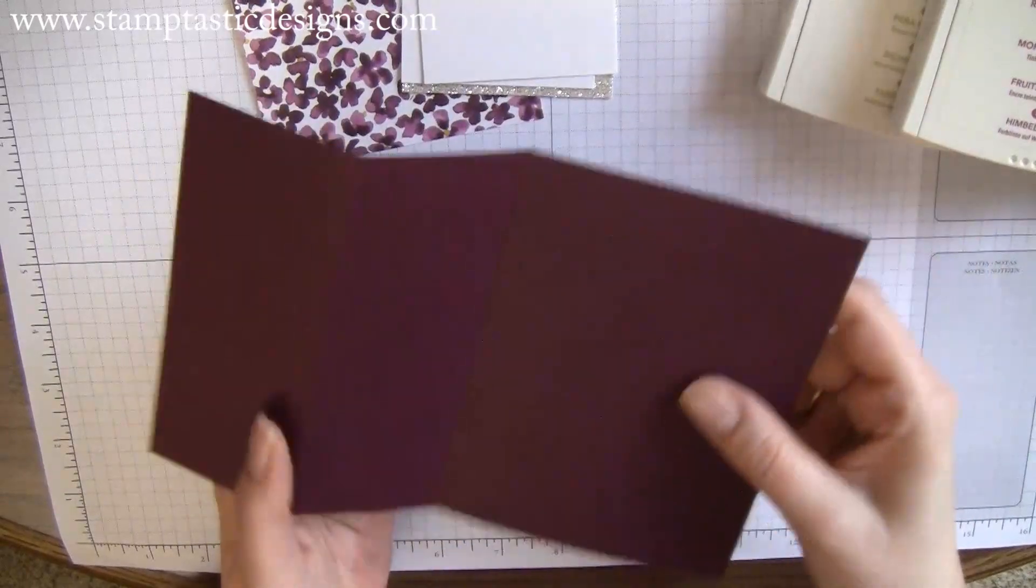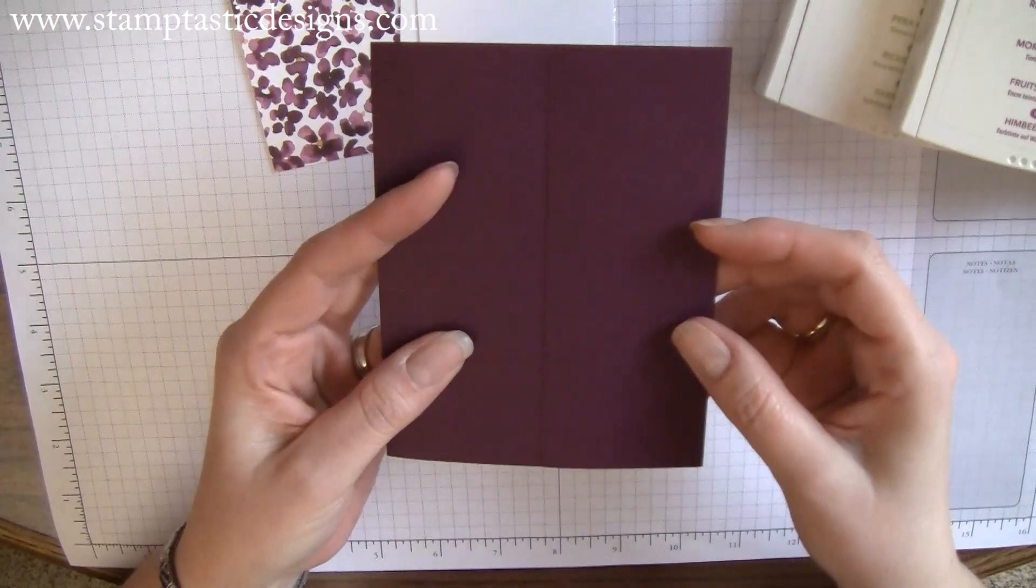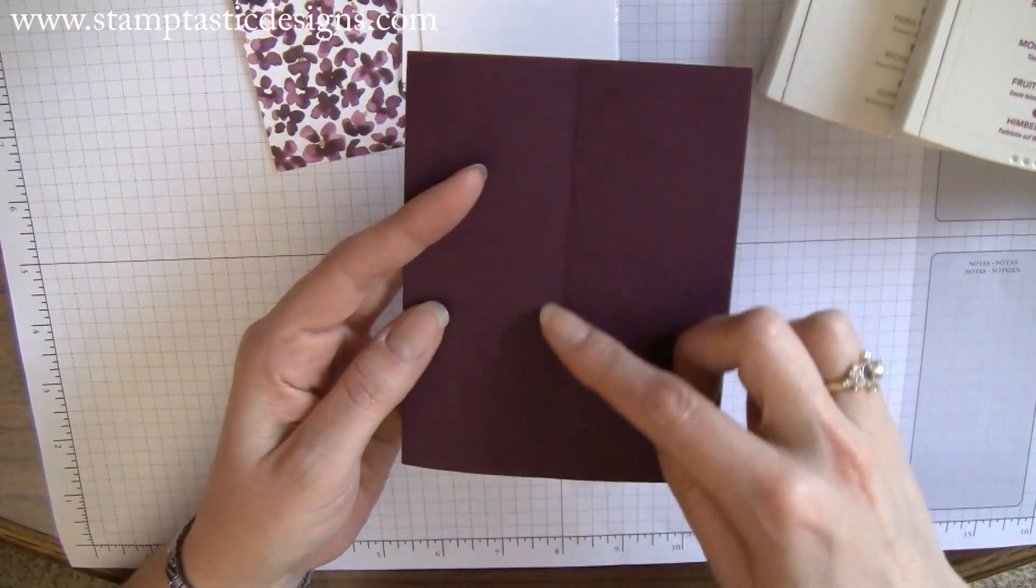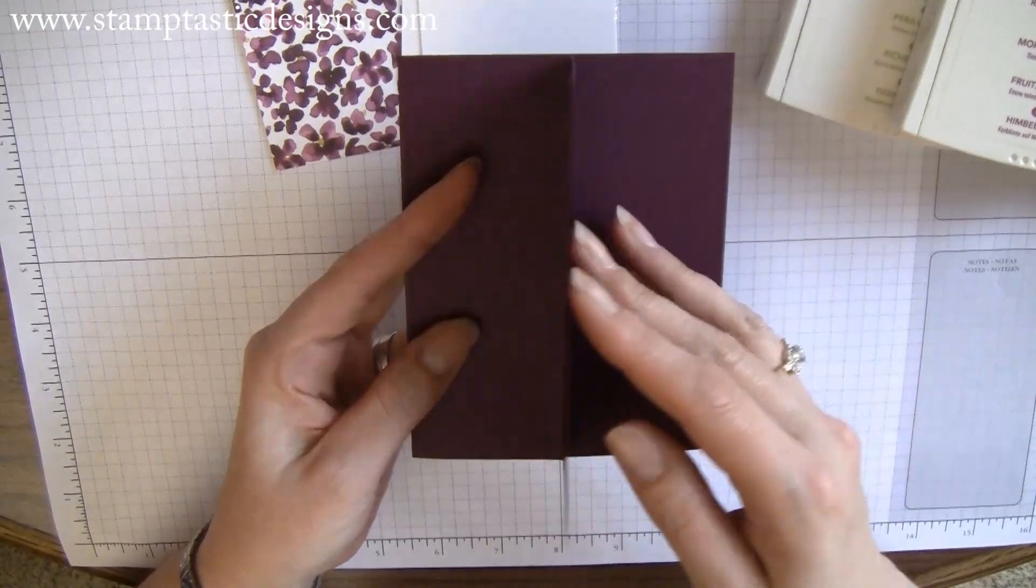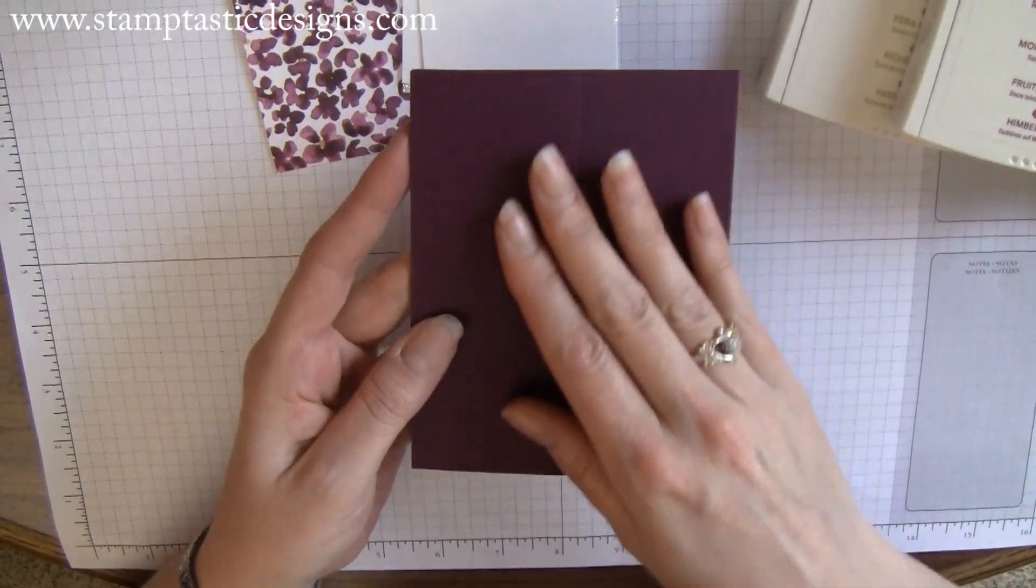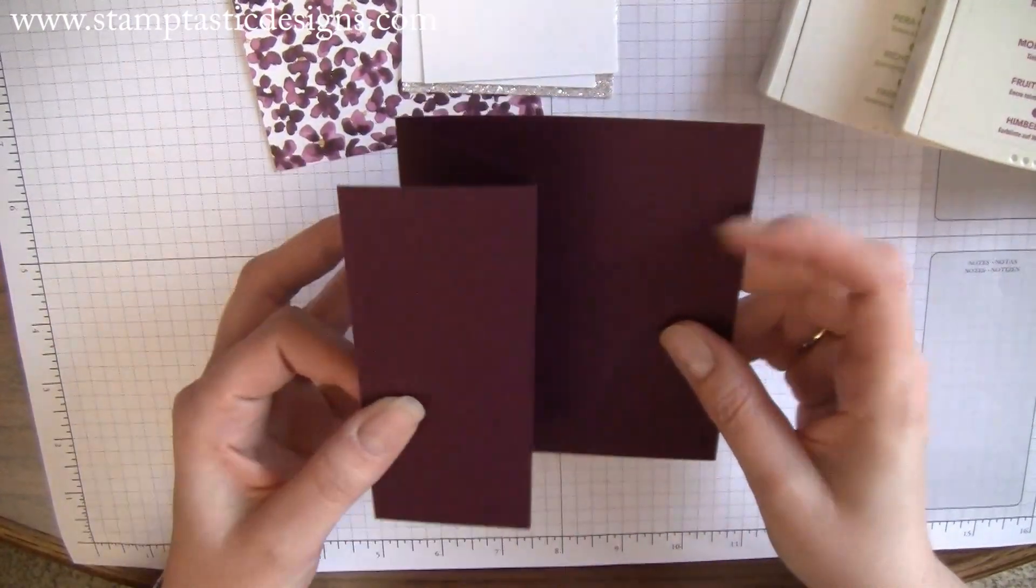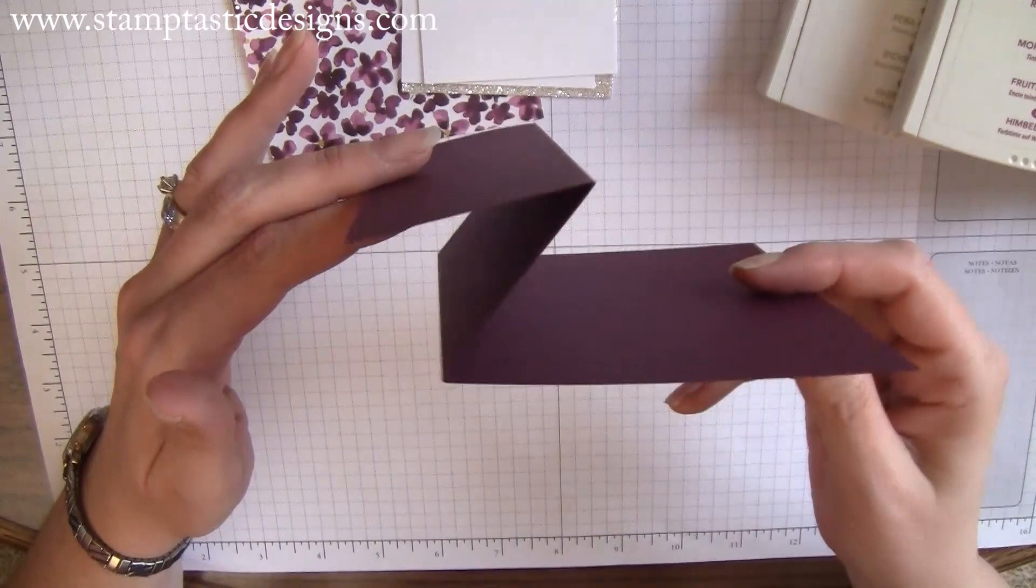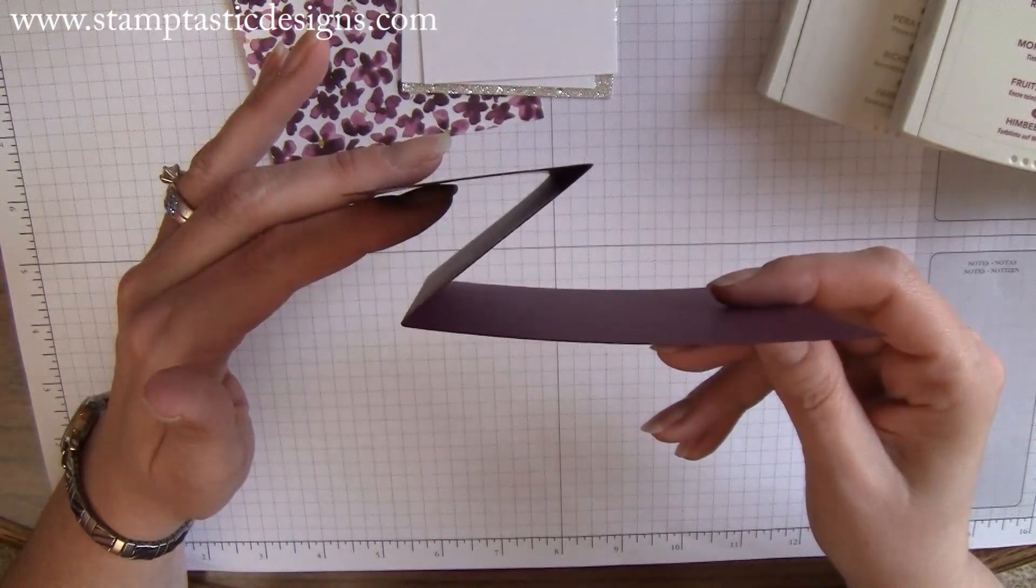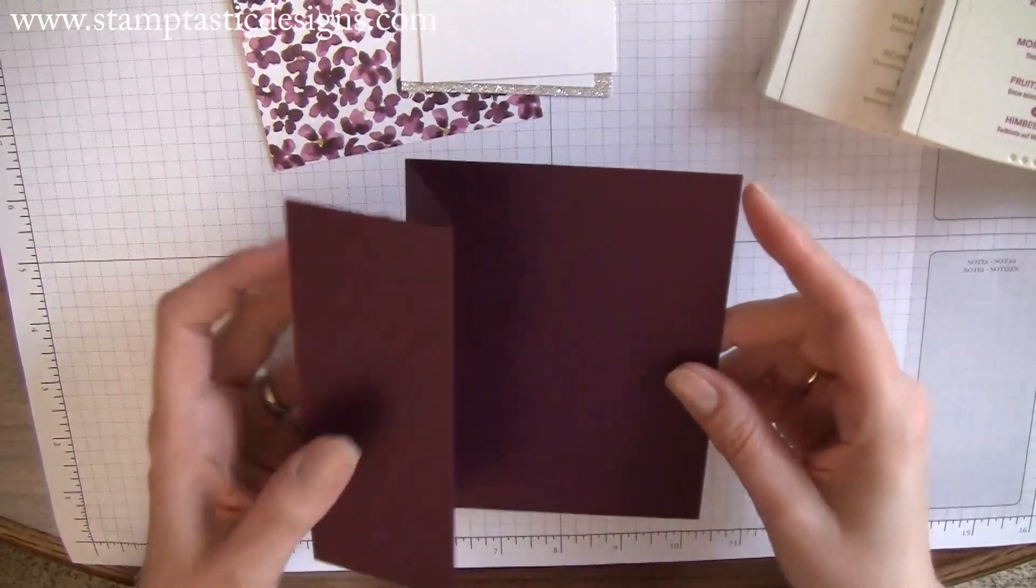Once you have everything scored, fold your first fold on your first score line. You'll see the second score line here. Take that and fold it backwards. That's how you get your Z fold. They call it a Z fold because it looks like the letter Z. Now you have your fancy fold card.